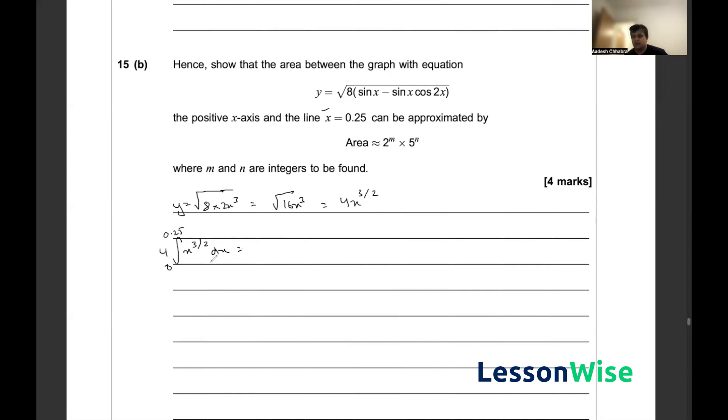If I solve the integral for this, it comes out as 4 on the outside and then 2 by 5 times x to the power 5 by 2 within the interval of 0.25 and 0.